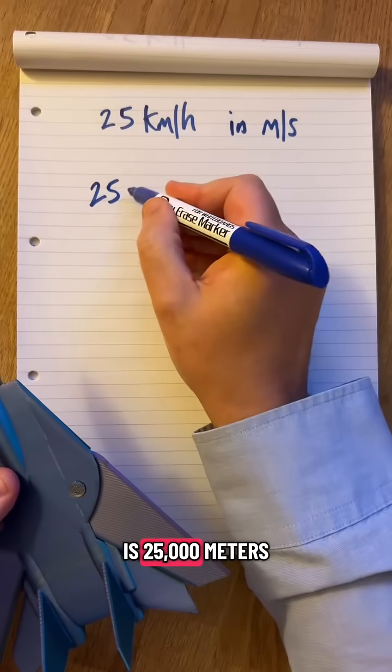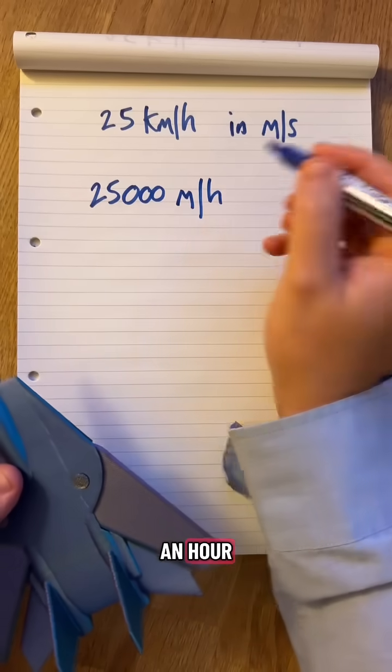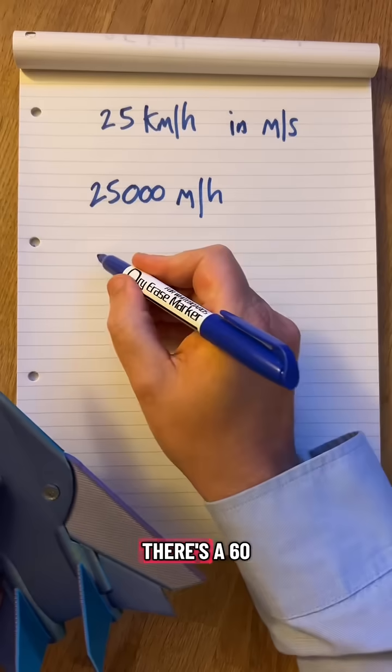kilometers is 25,000 meters. An hour we need to be in seconds, so how many seconds in an hour?